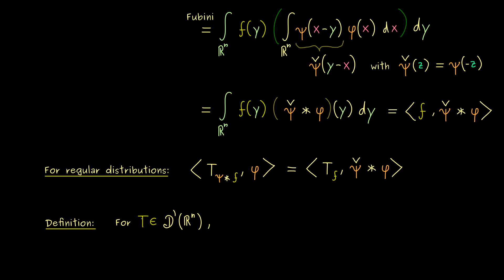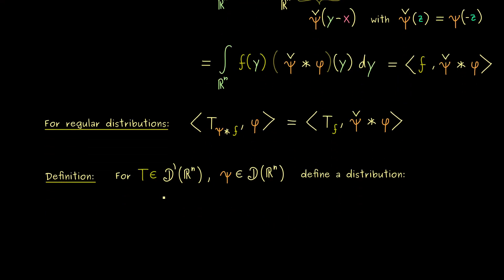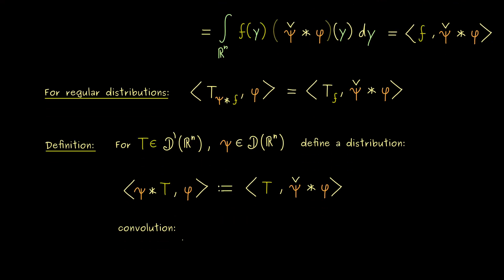Therefore, let's fix a general distribution T from D' and a test function ψ. And for these two inputs, we can define a new distribution. Namely, we just say that ψ star T defines a distribution, and we do that by using the formula from above. This means we have to apply the distribution T to this new test function given by this convolution. In fact, it's not hard to prove that ψ check star φ is a test function again. Hence, this is the important definition that generalizes the convolution to distributions.